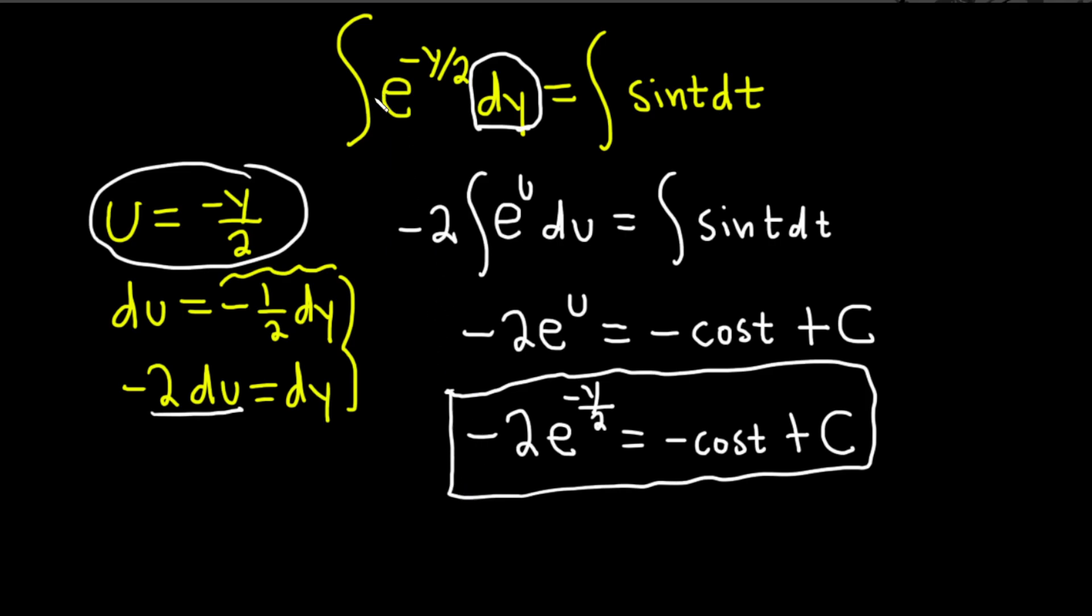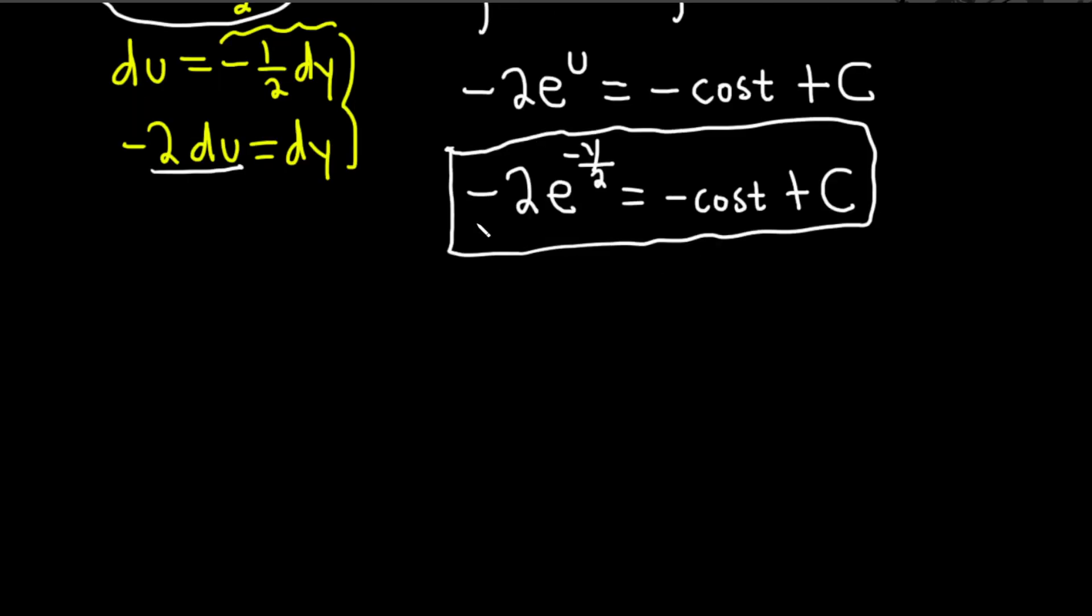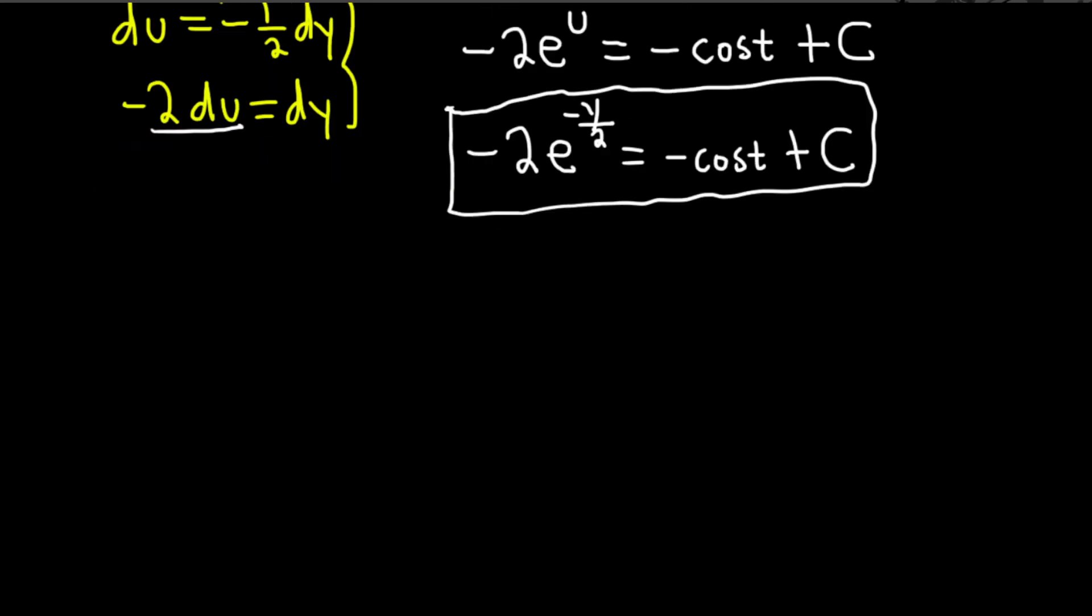So I mentioned there was a shortcut to integrating e to the negative y over 2. Let me just go ahead and show you really quickly because it's really important to know the shortcut. So if you have the integral of e to the negative y over 2 dy